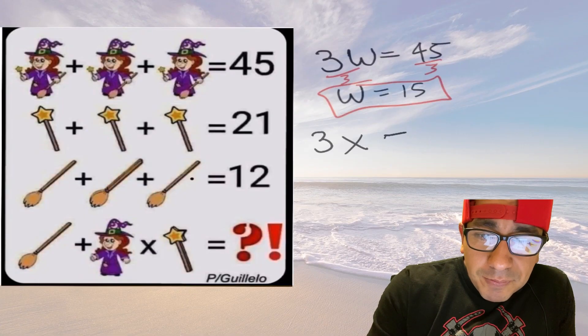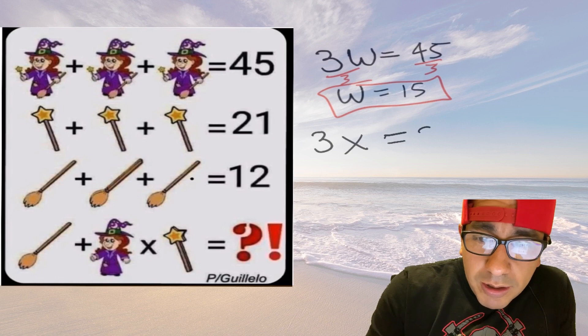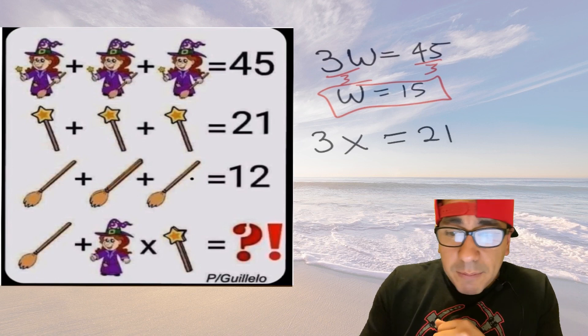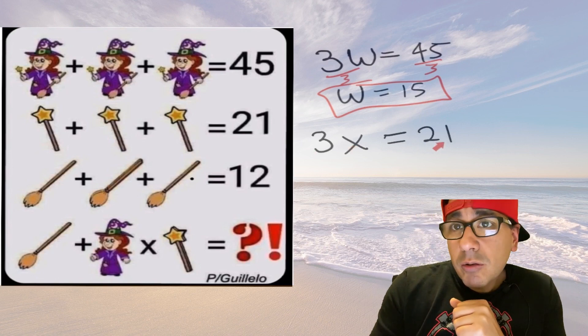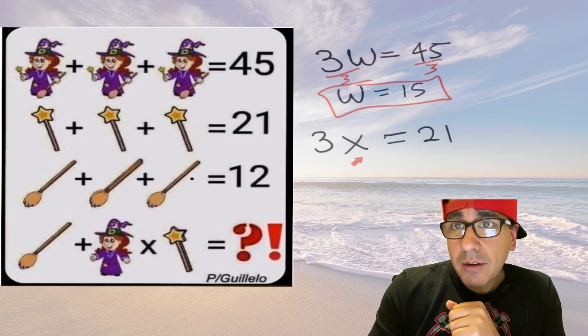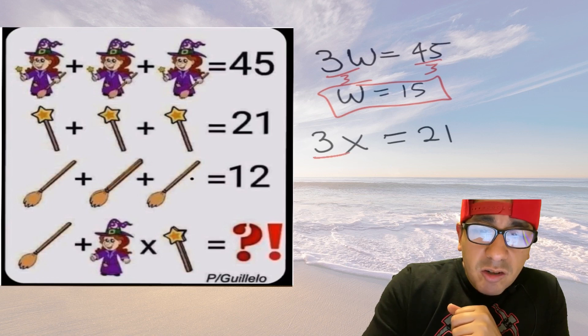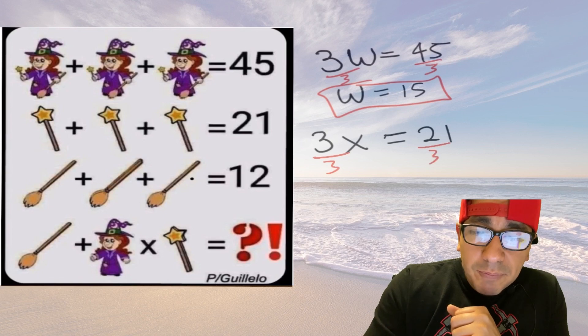But we'll say three X's, three wands equals 21. So three times what number equals 21? Well, three times seven. But again if you want, you could use algebra, divide both sides by three.